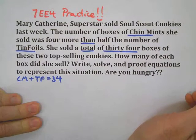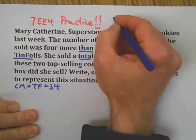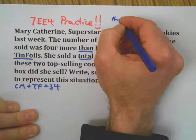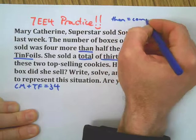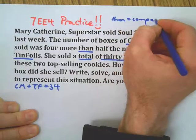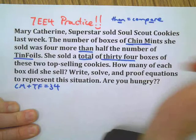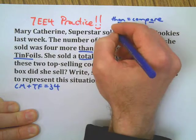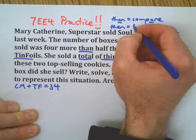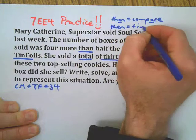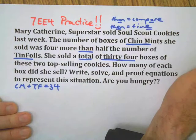A little grammar note: 'than' is a comparison. When you see the word 'than,' that means you're comparing something — the A is the key there. And if you're talking 'then,' it's time — you've got the E. There are other ways to remember it.